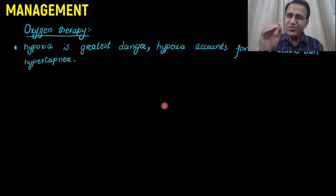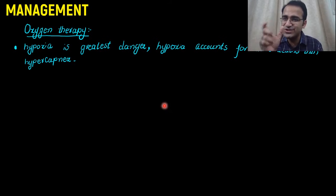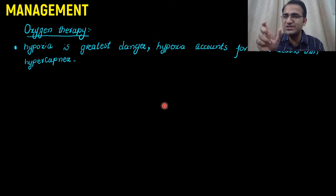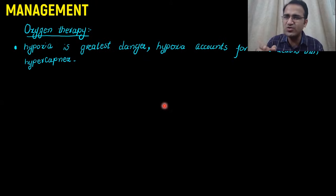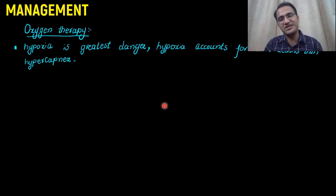Remember that you have to maintain a certain level of hypoxia in these patients. You have to give oxygen — maintain the saturation between 88 and 92 — and do not give oxygen beyond that, so that there is a certain level of hypoxia that continues to stimulate the central nervous system.